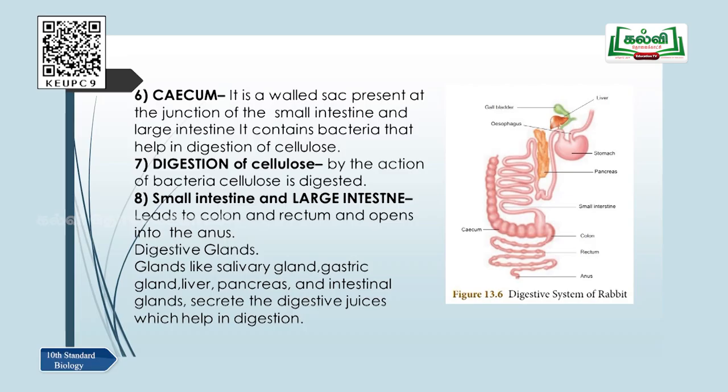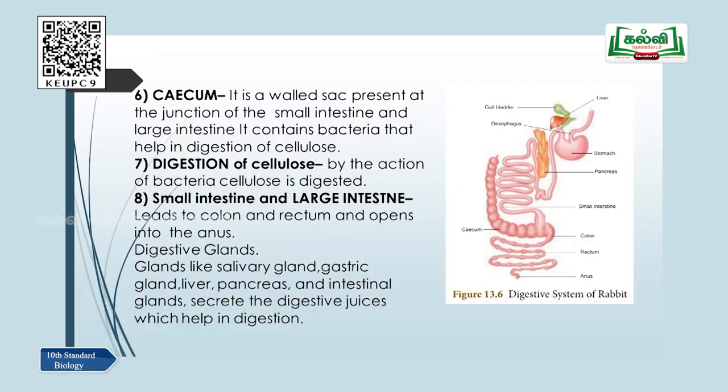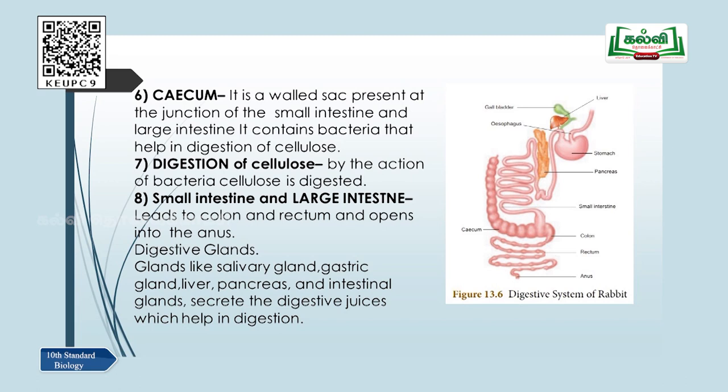The small intestine and large intestine lead to the colon and rectum and open into the anus. The digestive glands are: salivary glands — the pharynx secretes saliva with the help of the tongue — gastric glands in the stomach secreting digestive juices, liver, pancreas, and intestinal glands. These glands secrete digestive juices which help in digestion.